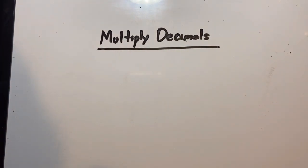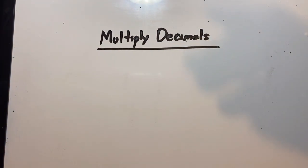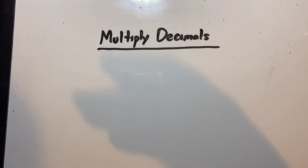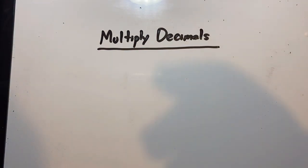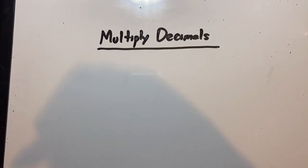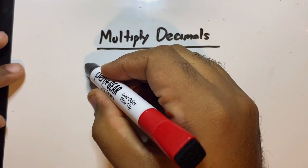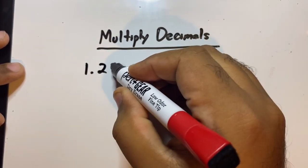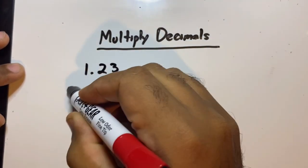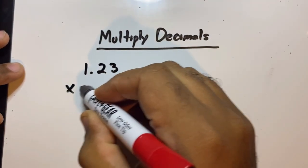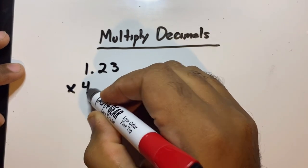Hey kiddos, it's me again, Mr. V, the good teacher — or at least I'm trying to be. Now we're going to be multiplying decimals. In the last two videos I showed you how to add and subtract. Now we're multiplying decimals, and I'll start off simple like we always do. Let's do 1.23 times 4.55.